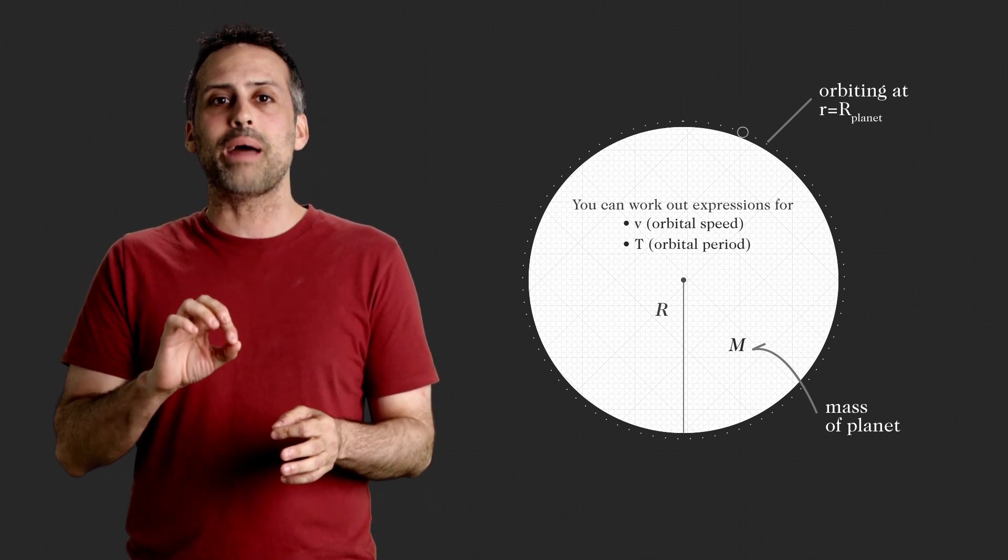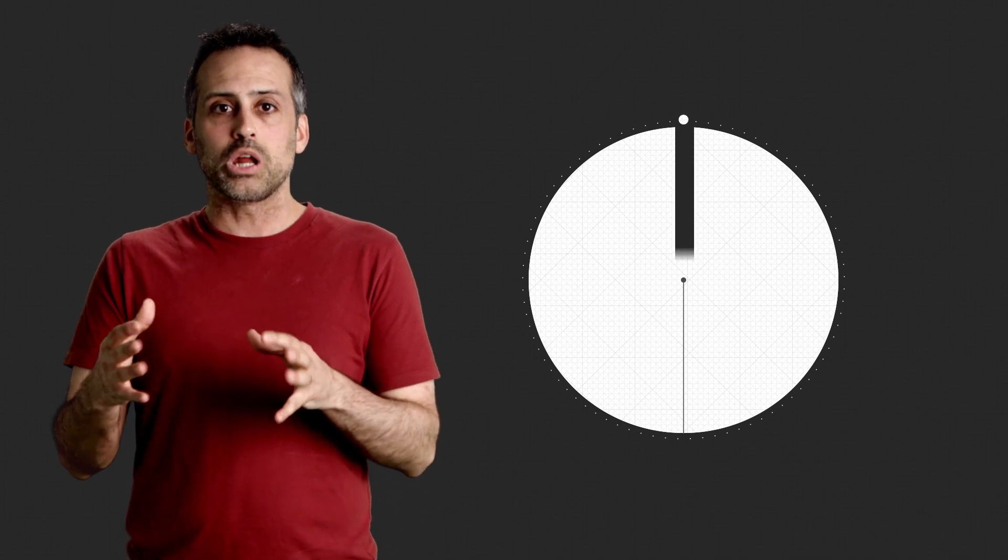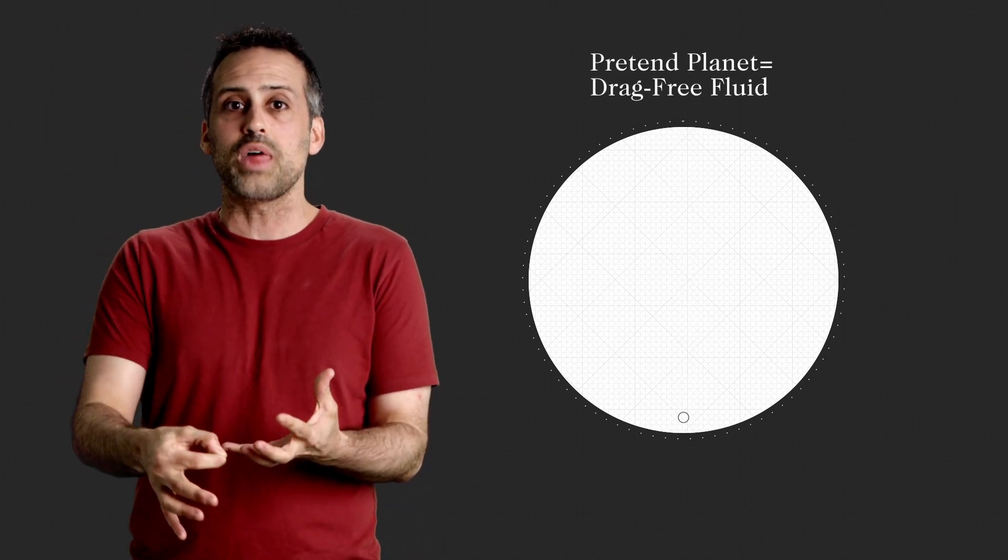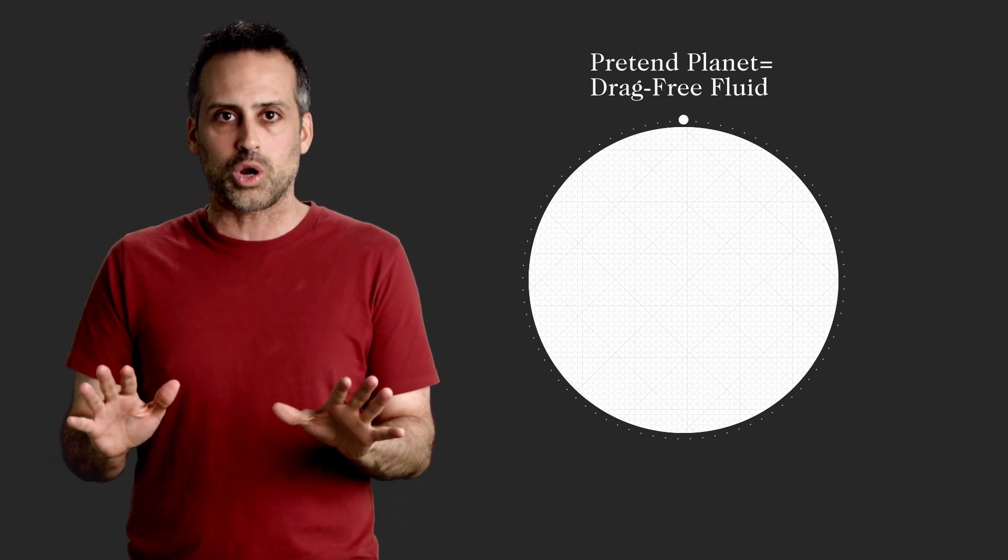Keep that in mind, and now imagine a second particle that we release from rest at the planet's surface, and that we allow to fall through the center of the planet to the other side. You can imagine doing this with a super thin evacuated tunnel along a diameter of the planet, but I think it's easier to pretend that the planet is a uniformly dense fluid, and that this particle can pass through that fluid without friction. Again, I think you know what I mean here. This is not supposed to be a trick question.